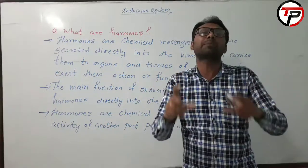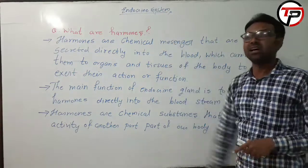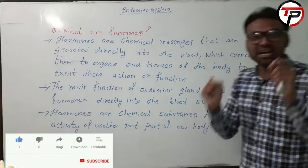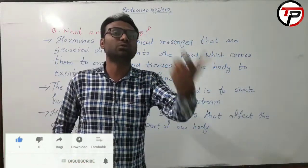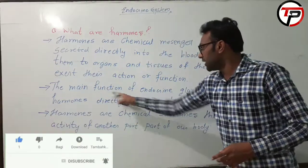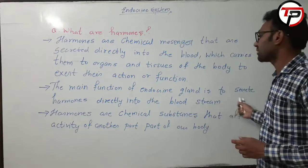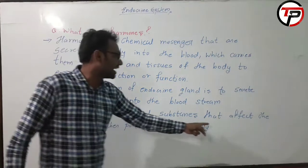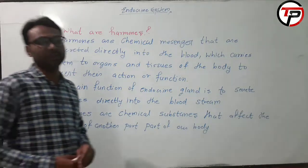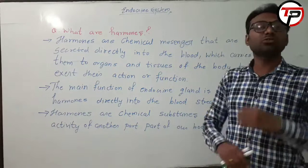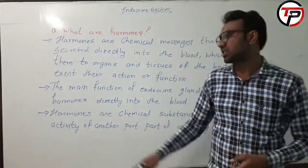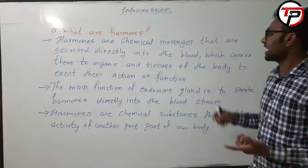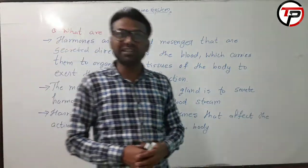The main function of endocrine glands is to secrete hormones directly into the bloodstream. Hormones are chemical substances that affect the activity of another part of the body. The bloodstream carries them to the organs in order to change the activity of that affected part.